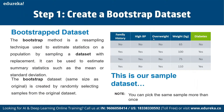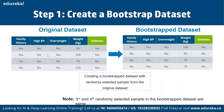Bootstrapping is a resampling technique used to estimate the population by sampling a data set with replacement. It can estimate summary statistics such as mean or standard deviation. The bootstrap data set is created by randomly selecting samples from the original data set. For example, with features like family history, high blood pressure, overweight, total weight, and the possibility of having diabetes (yes or no), we make random selections and create a bootstrap data set with randomly selected samples, where some samples may be repeated.